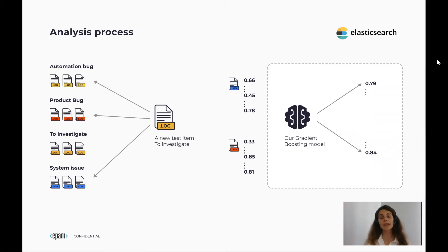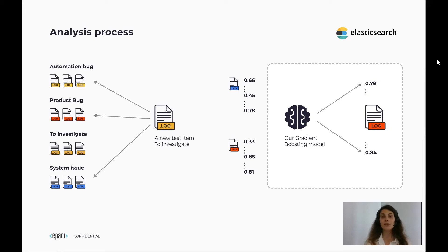The features become an input to our gradient boosting model, which predicts the probability for a test item to be of a specific defect type. The issue type with maximum probability and more than a threshold of 0.5 will become the final decision for analysis. In our case, the new test item will be labeled as a product bug, and the information from the best representative of this group, such as issue description and Jira tickets, will be copied to this new test item.